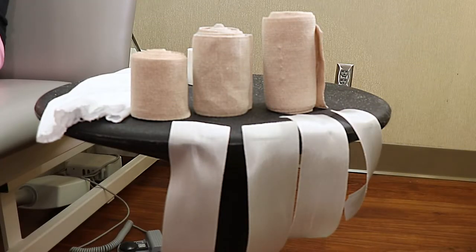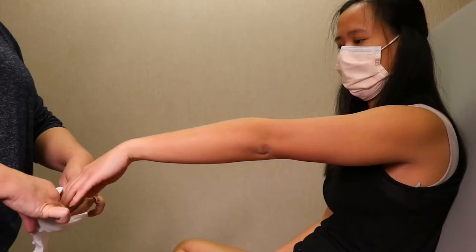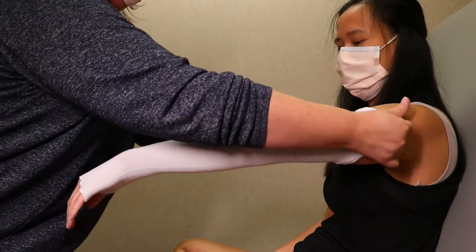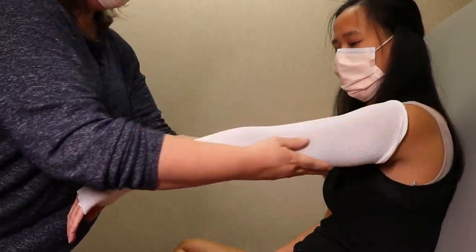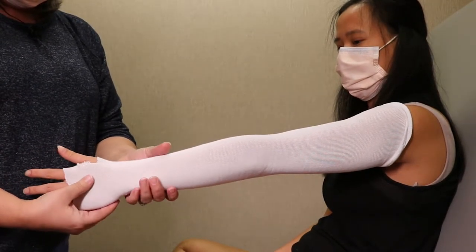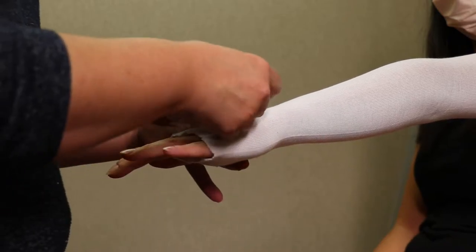Begin by having your supplies ready. Apply the liner that you and your therapist have discussed. If you are using a stockinette liner, you may wish to cut a thumb hole. Begin with your smallest bandage.